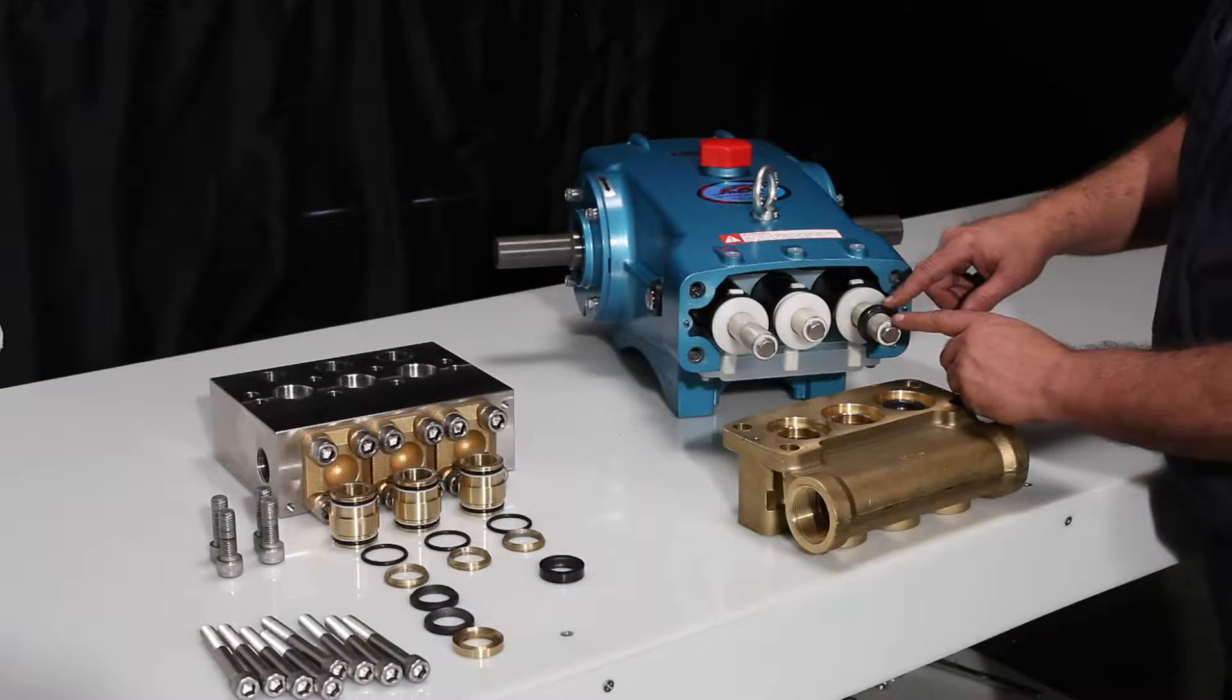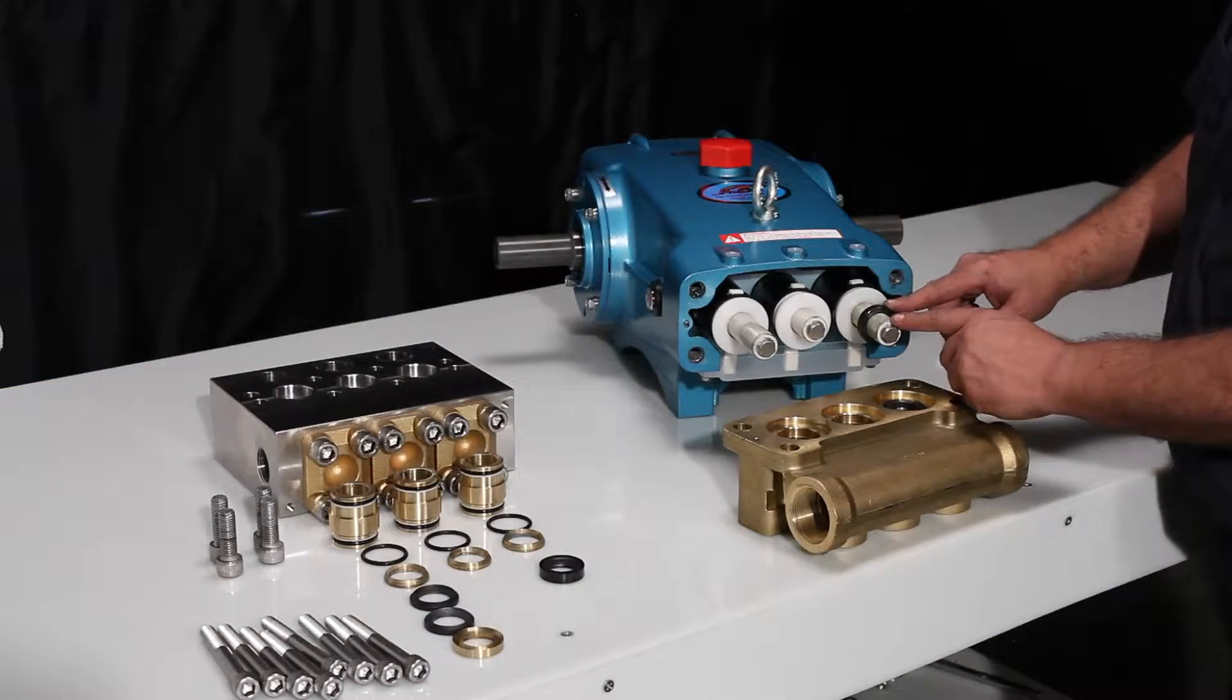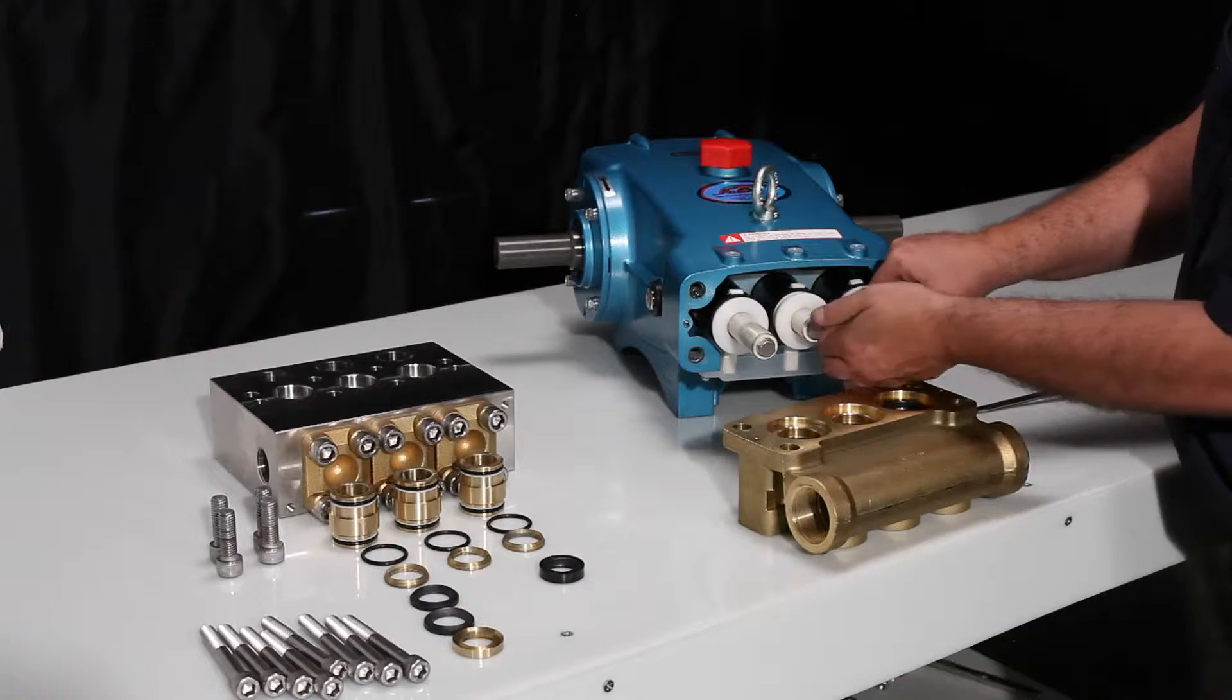In some cases, the low pressure seal will remain on the plunger. These can be pulled off the plunger by hand.